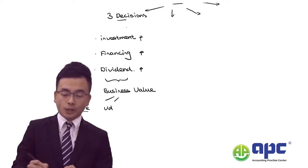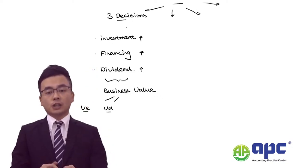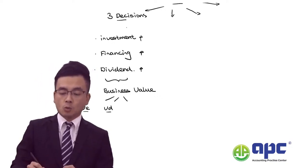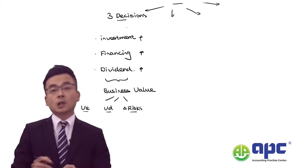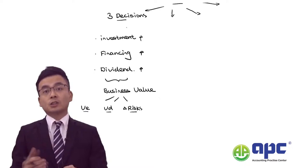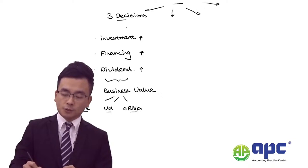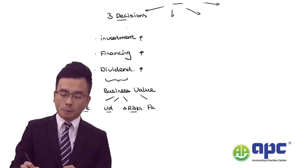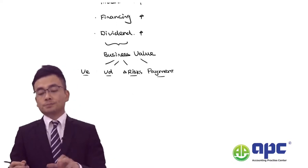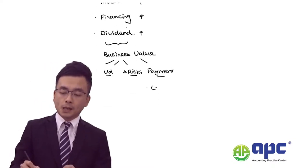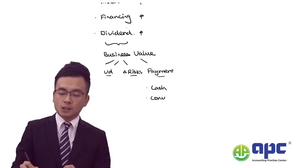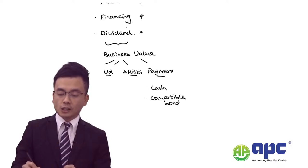We also discuss the value of debt — for example, the valuation of traded debt — and what if there are any changes in risks when we are valuing the business, especially when the business enters into a new industry. We also need to determine the payment form, which can be in the form of cash, convertible bond, or share-for-share exchange, meaning we are exchanging shares with no cash spent by the acquirer.